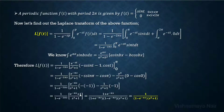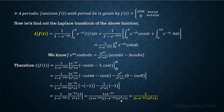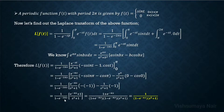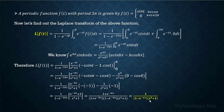This equals 1 plus e raised to minus πs over (1 plus e raised to minus πs) times (1 minus e raised to minus πs) times (s squared plus 1). Note that 1 minus e raised to minus 2πs is of the form a squared minus b squared, with a equal to 1 and b equal to e raised to minus πs, so it factors as (1 plus e raised to minus πs)(1 minus e raised to minus πs). Cancelling the common factor, Laplace of f of t equals 1 over (1 minus e raised to minus πs) times (s squared plus 1).